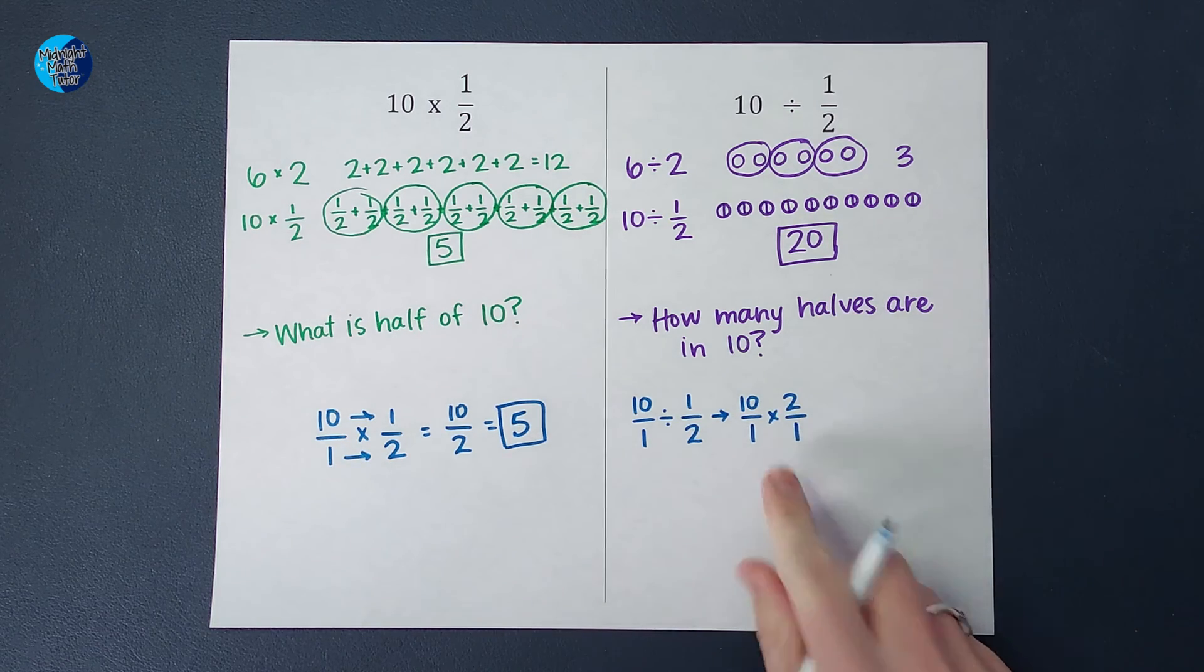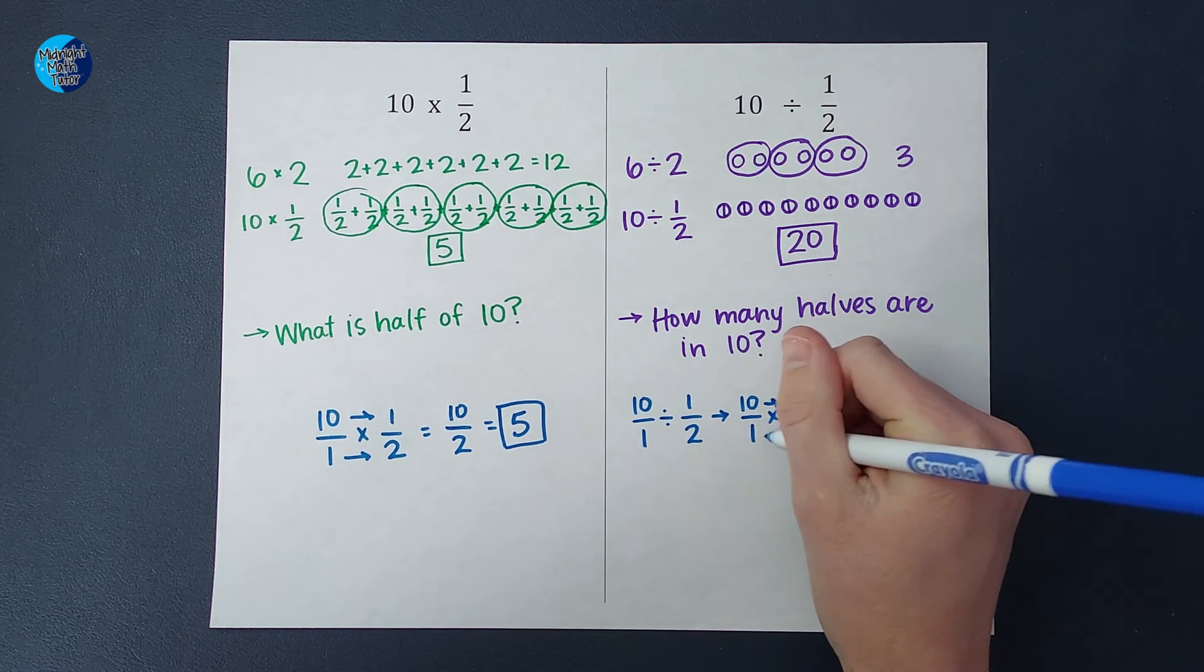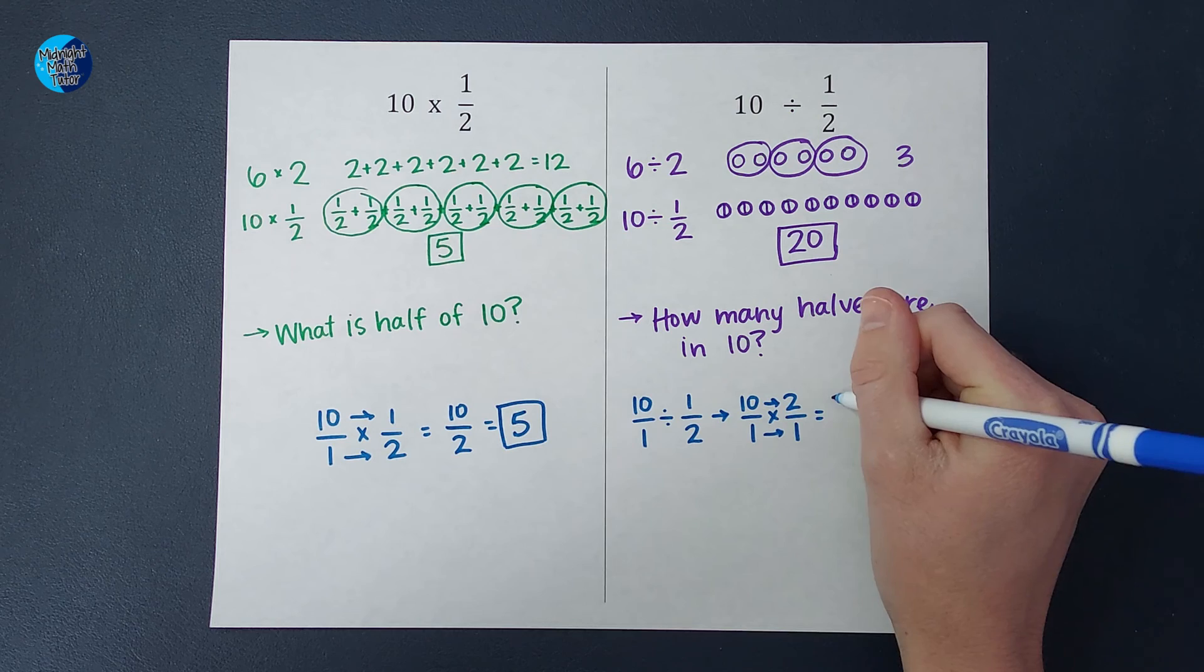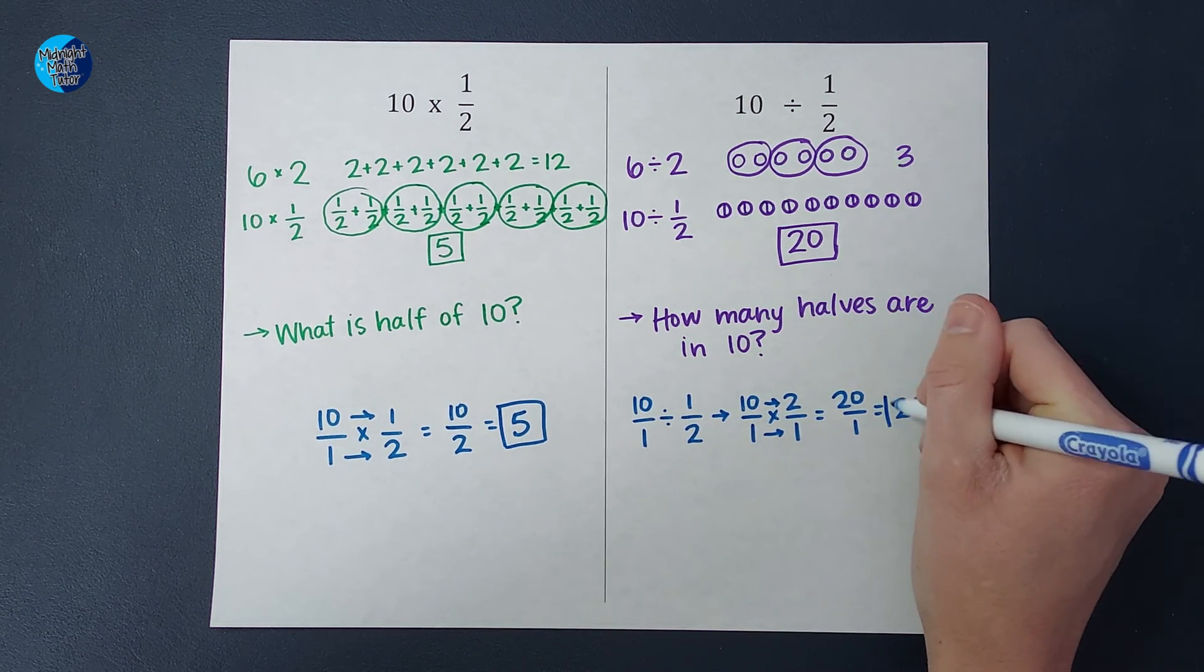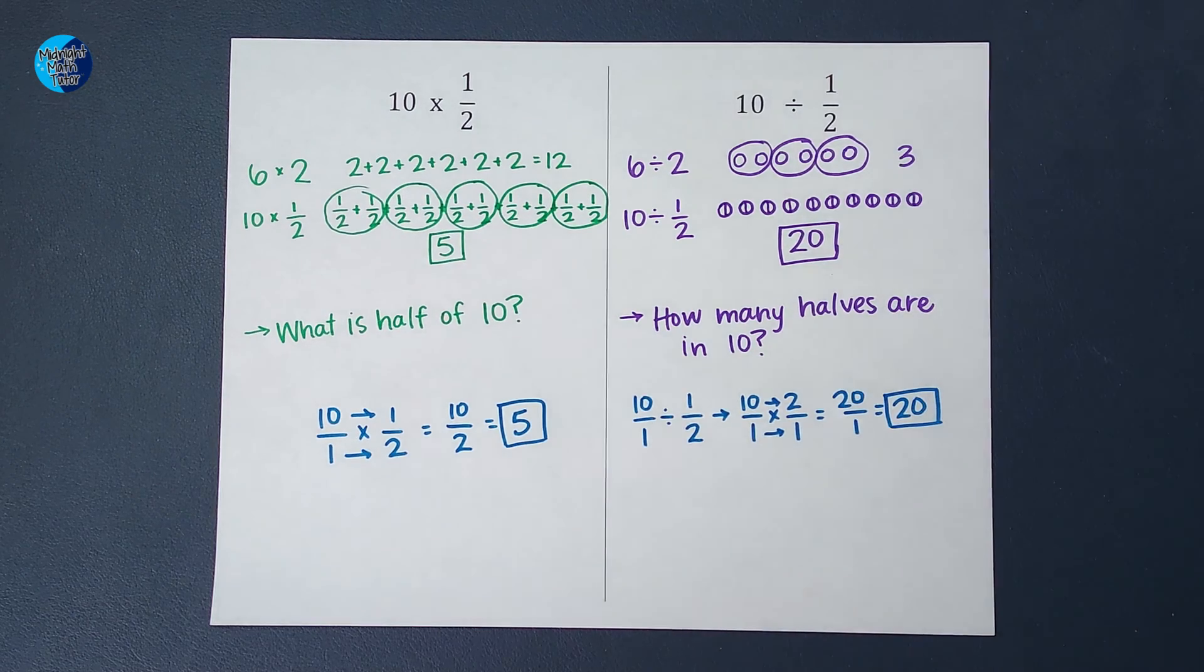Okay. So we flip and multiply, multiply straight across, and I end up with 20 over one, which just simplifies down to 20. Oh my gosh. Don't we love it when all of these things work out? Okay. I hope this made sense. Thanks.